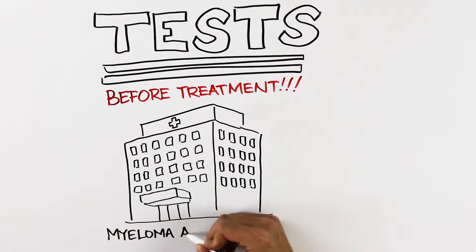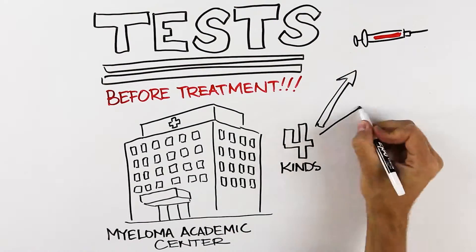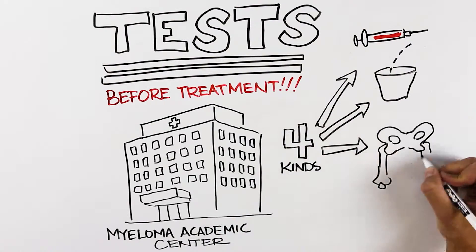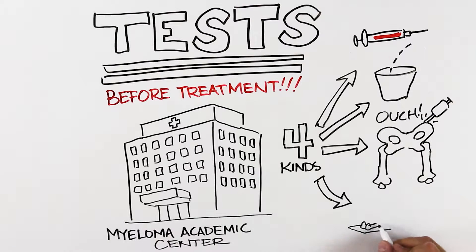A myeloma academic center is a great place to do your initial testing. These tests include blood tests, urine tests, bone marrow biopsies, and imaging tests like MRIs and PET CT scans.